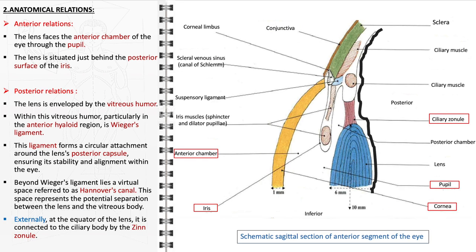Around the lens's equator, it is structurally supported by the zonule, a series of fine fibers that extend from the ciliary body. These fibers are crucial for holding the lens in place and play a vital role in the process of accommodation, where the lens changes shape to focus on near or distant objects.